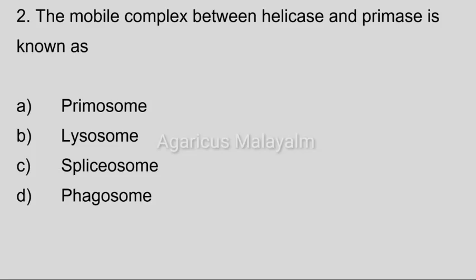Second question. The mobile complex between helicase and primase is known as: Option A, Primase; Option B, Lysosome; Option C, Splicosome; Option D, Phagosome. Correct answer: Option A, Primase.